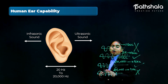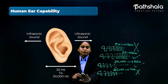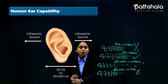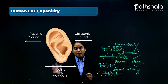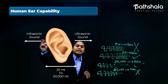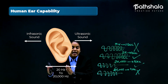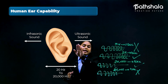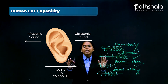So here is the range of human capability: we can only hear frequencies of 20 hertz to 20,000 hertz. Sound frequency below 20 hertz is known as infrasonic sound, and sound above 20,000 hertz is known as ultrasonic sound.